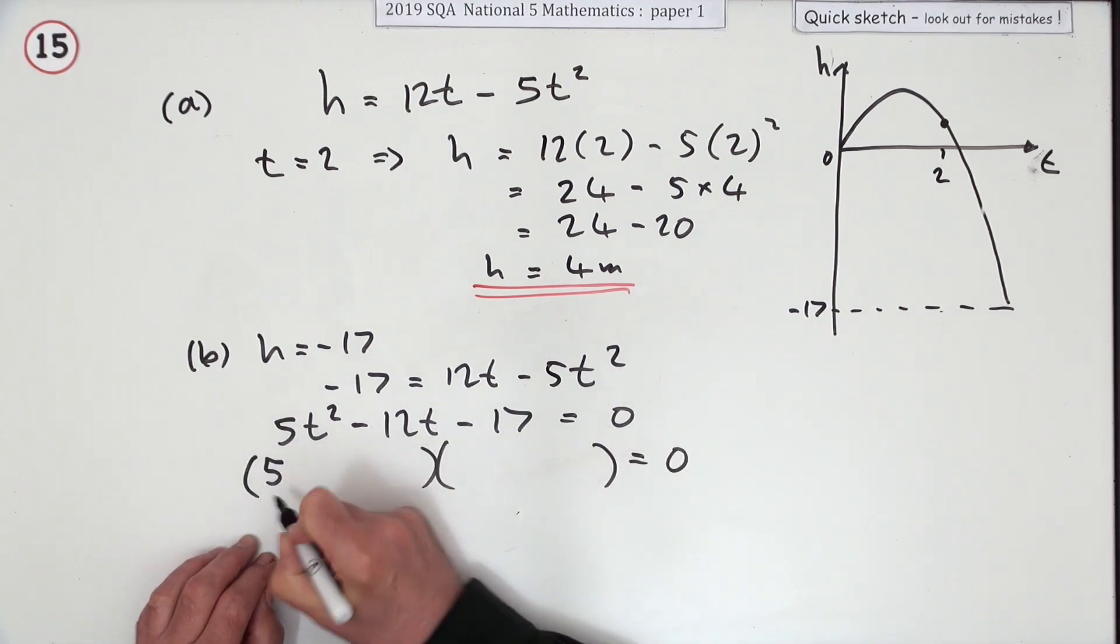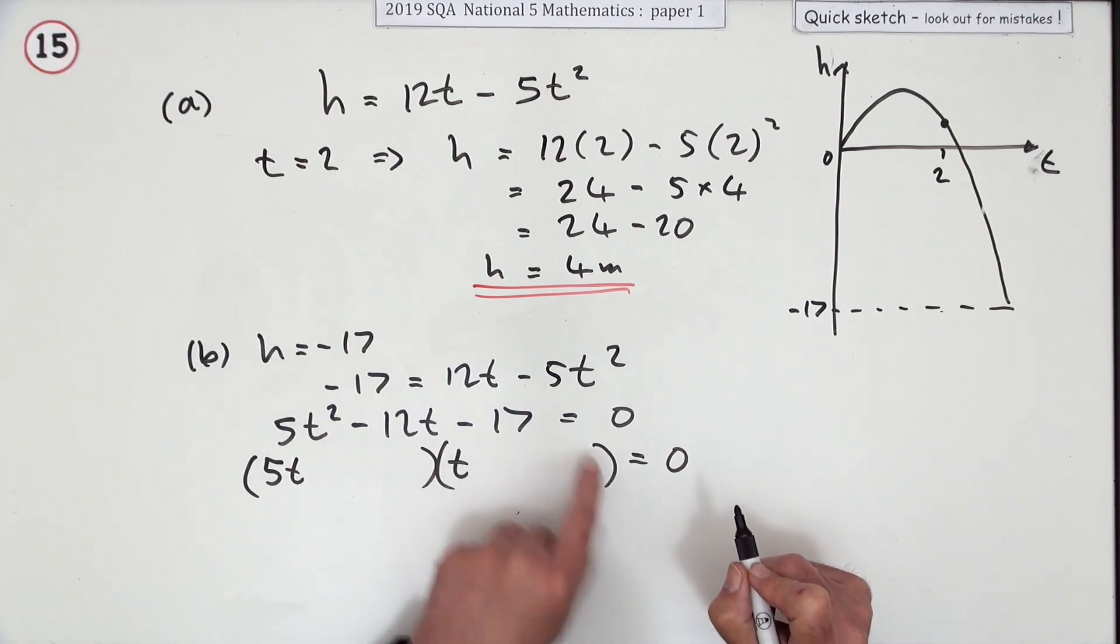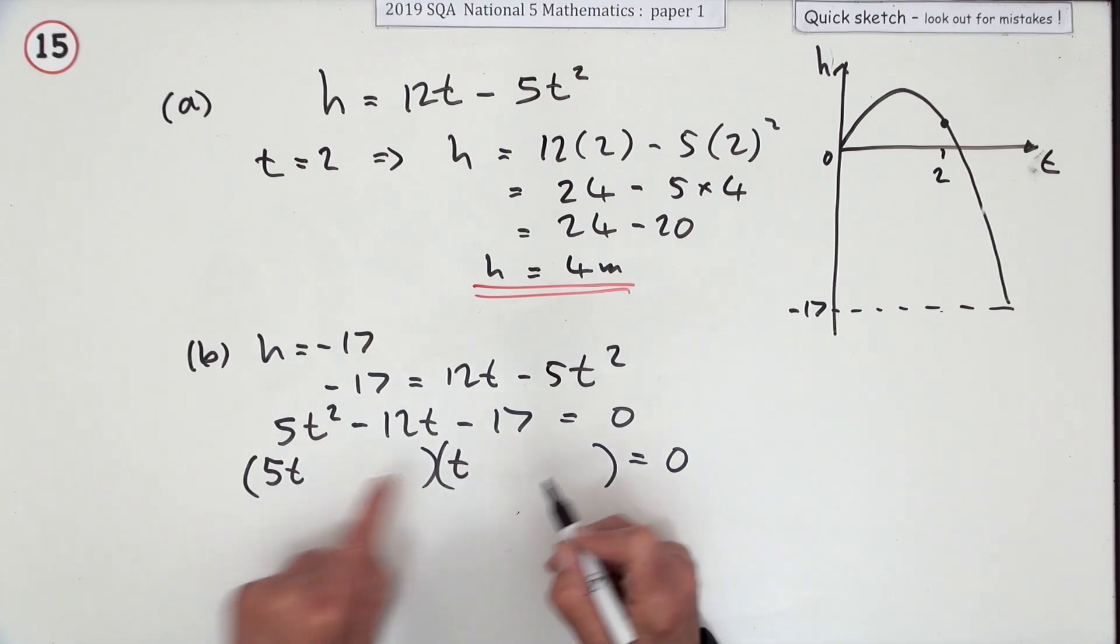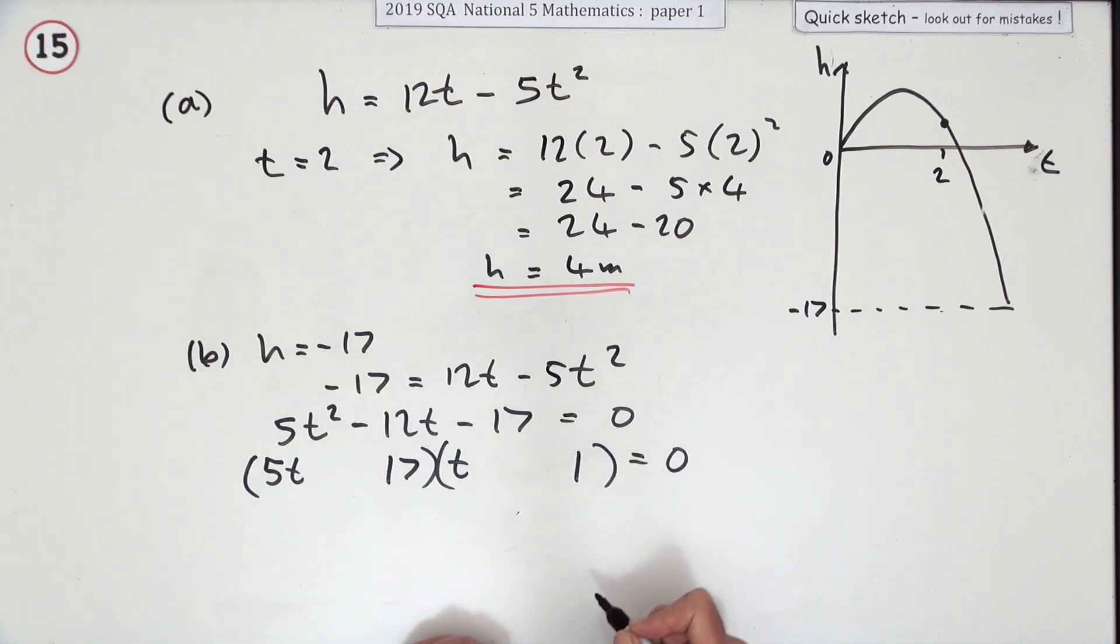Factorizing it: well, 5 is easy because it's prime, so it's 5 times 1. 17 is easy, it's 1 times 17, but they have to have a difference of 12. Well, 5 and 17, so don't touch the 17 with a 5, so put the 17 there and the one there. Then it's meant to be negative, so the 17t can be negative and the outer product can be positive. That gives you two answers: that means t is either equal to 17 upon 5, or t is equal to negative 1.